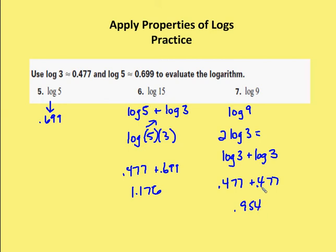0.477 plus 0.477 leaves me with 0.954. So that's my result. And again, you can rewrite this particular log expression in two ways. I can write it as log 3 squared, or log of 3 times 3, which ends up being log of 3 plus log of 3.